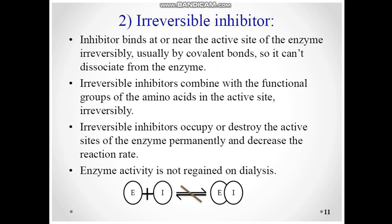Next we have the irreversible inhibitor. The inhibitor binds at or near the active site of the enzyme irreversibly, usually by a covalent bond, and cannot be dissociated from the enzyme. Irreversible inhibitors combine with the functional groups of the amino acids in the active site irreversibly, occupying or destroying the active site permanently. This decreases the reaction rate, and enzyme activity is not regained on dialysis — unlike reversible inhibitors.